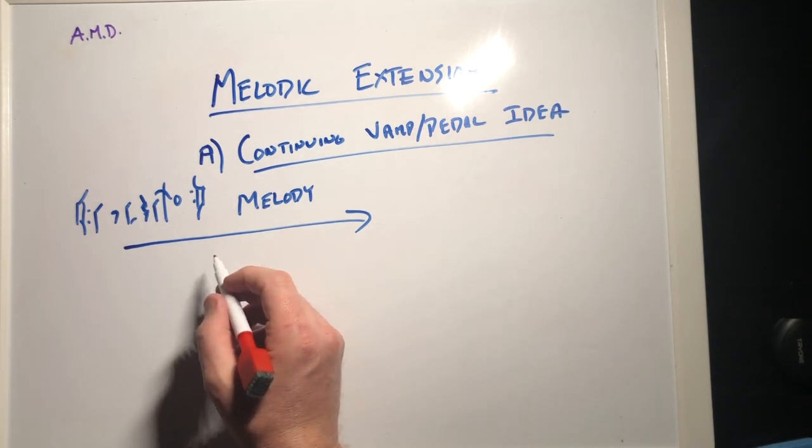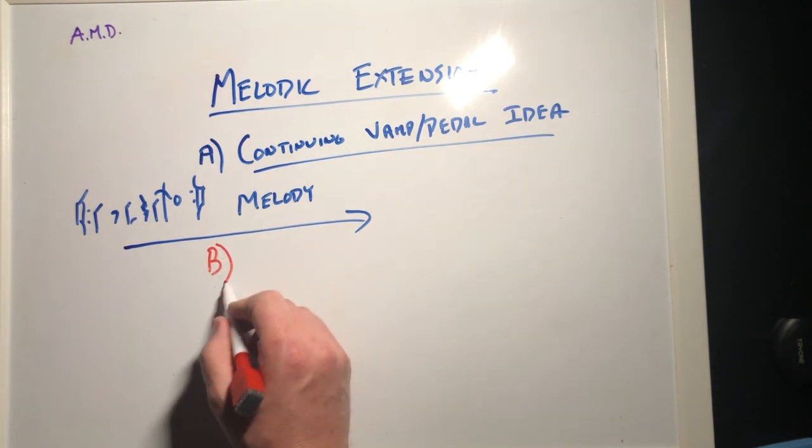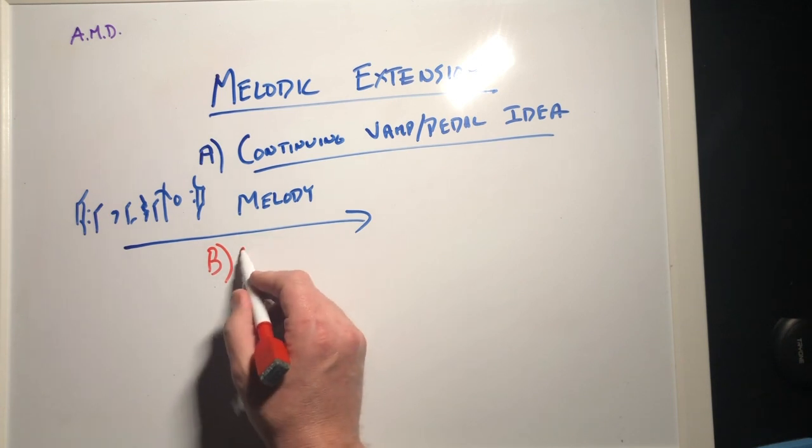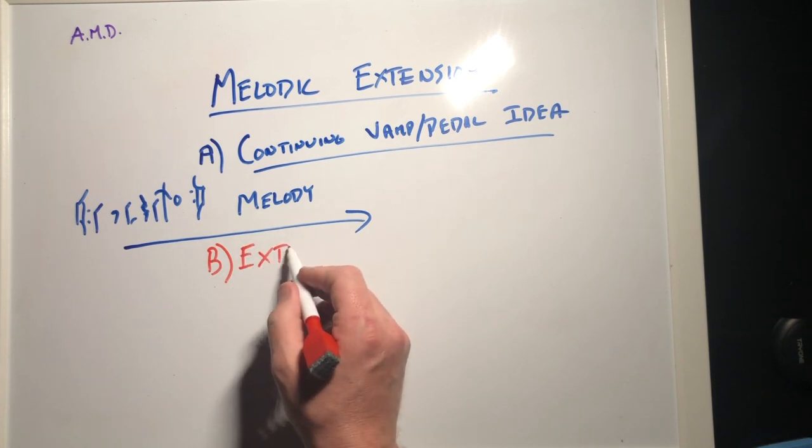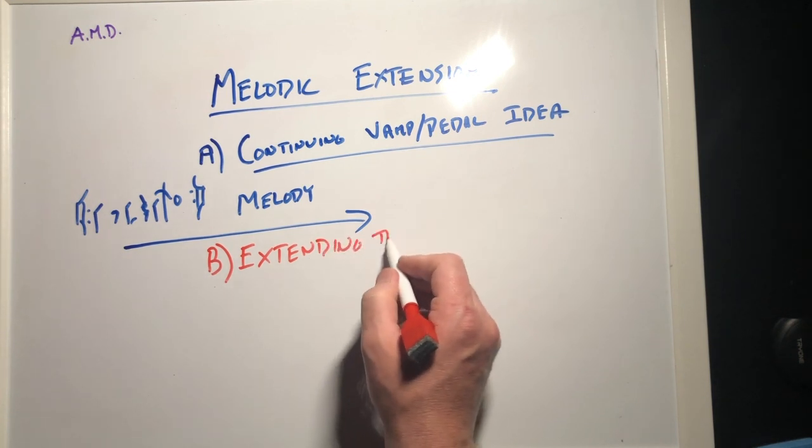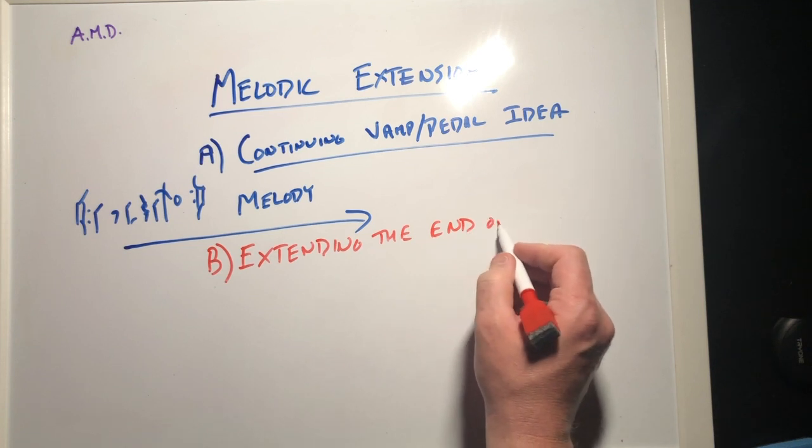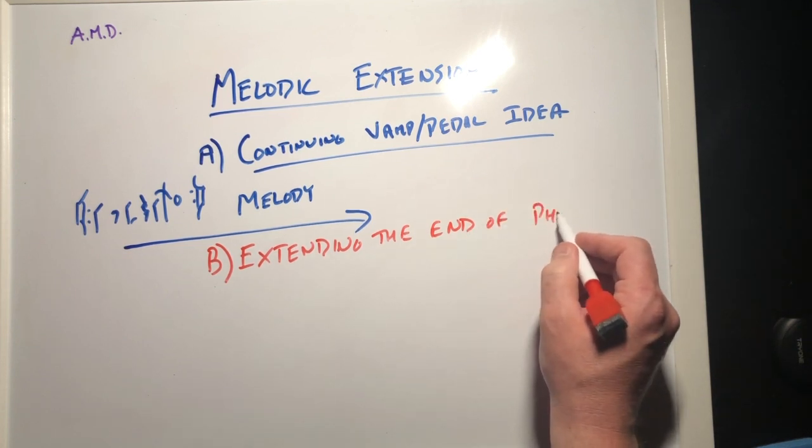The second idea is a similar approach but instead of using it at the beginning of a melodic phrase, using it at the end of a melodic phrase. This is another way we could sort of extend the melody out. There's a lot of songs especially from the Great American Songbook that end on a very long note, a note that's normally one bar, four beats worth or maybe two beats worth.